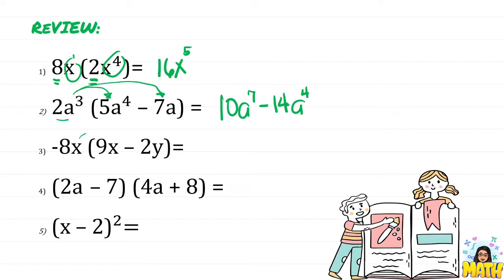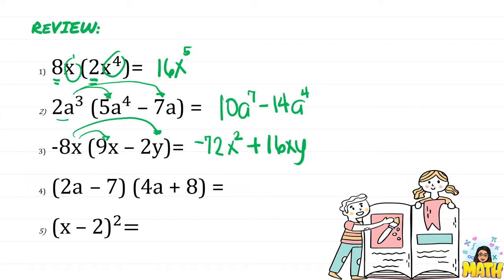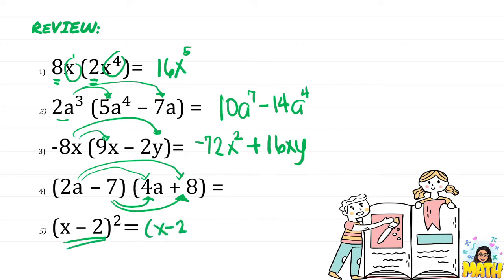Number 3 is also a monomial to a polynomial — we apply the distributive property. Negative 8x times 9x gives negative 72x squared, and negative 8x times negative 2y gives positive 16xy. Number 4 is about binomial times a binomial; we can still use the distributive property, multiplying each factor of one polynomial to another, though that is a long method.